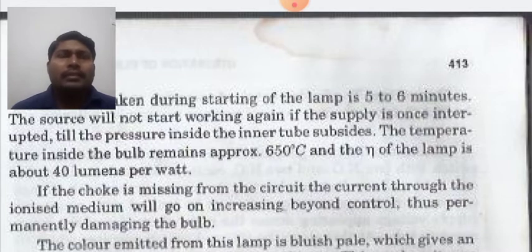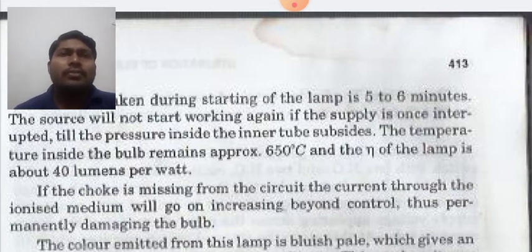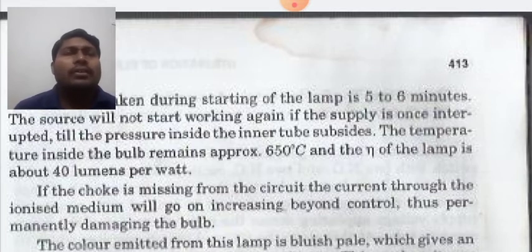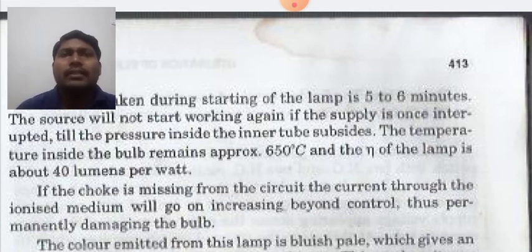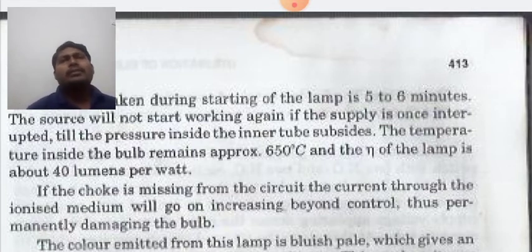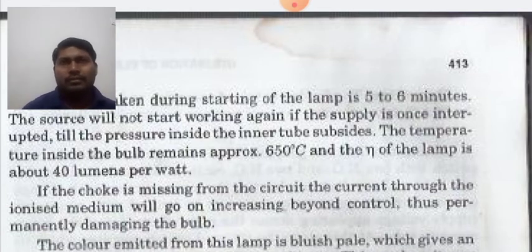The lamp will not start working again if the supply is once interrupted until the pressure inside the inner tube subsides. The temperature inside the bulb remains approximately 650 degrees centigrade. The efficiency of the lamp is about 40 lumens per watt. If the choke is missing, the current through the ionized medium will go on increasing beyond control, permanently damaging the bulb. You should never use it without a choke.